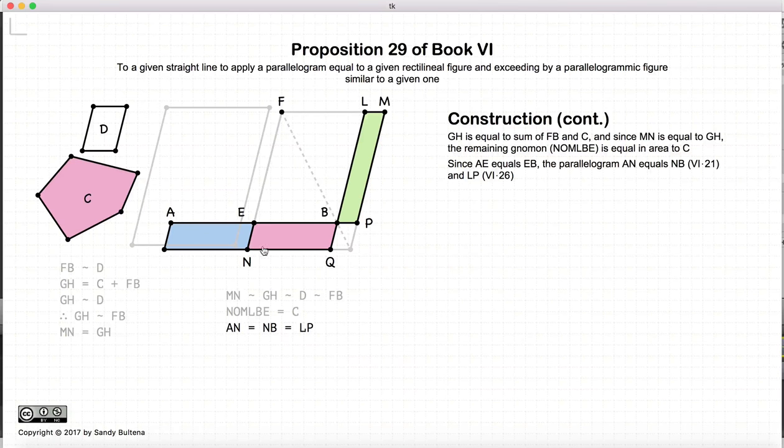So AN is equal to NB because they are drawn on a line with a halfway point at E and they have the same height.